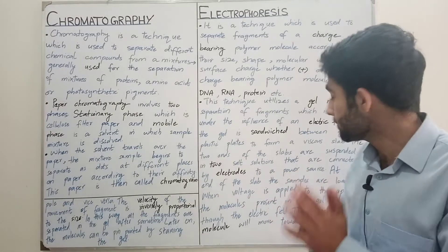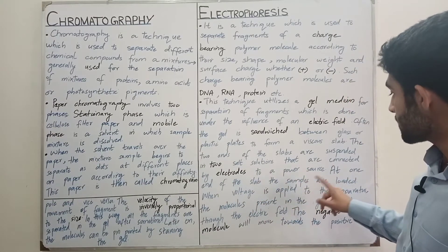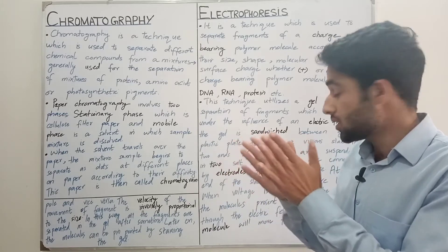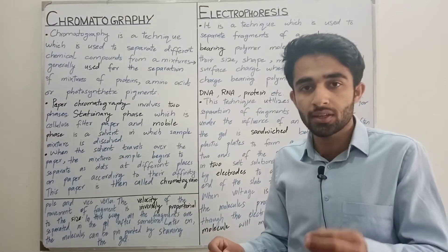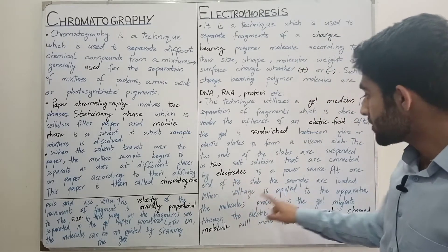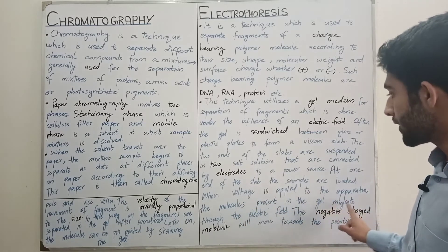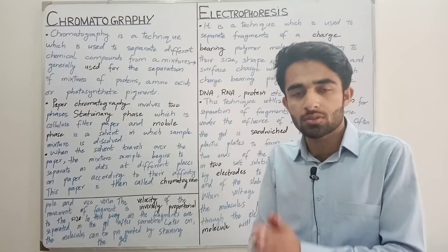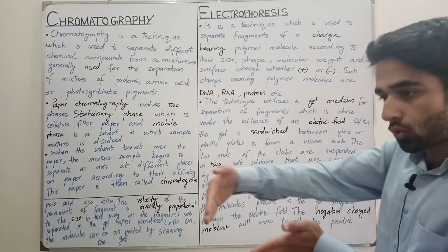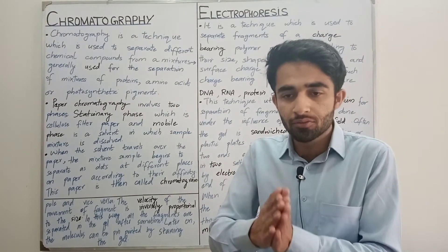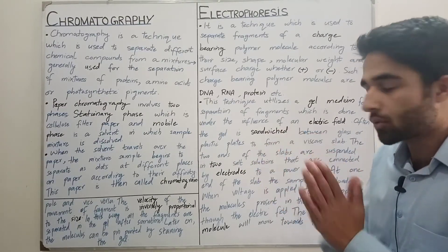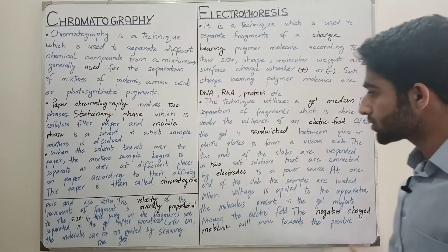At one end of the slab, the samples are loaded. Slab ke ek end mein jo hamare samples hain woh loaded hain, yani ke gel ke ek end mein hamare sample present hain. When voltage is applied to the apparatus, the molecules present in the gel migrate through the electric field. Jab hum voltage apply karte hain, to jo molecules gel mein present the woh migrate honge electric field ke through. The negative charge molecules will move toward the positive pole.